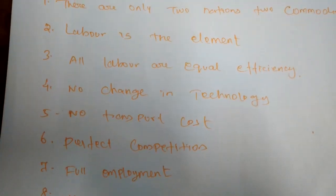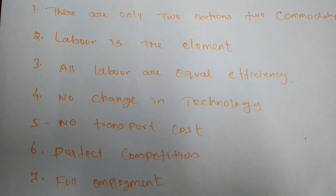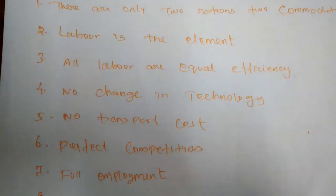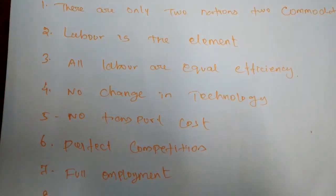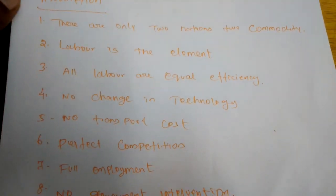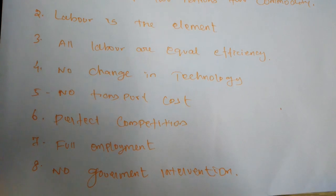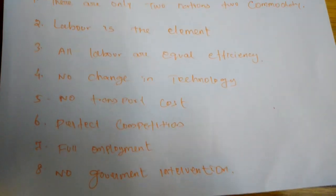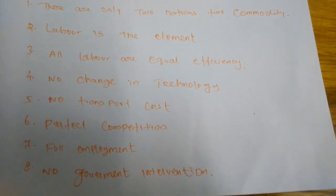Fourth, production is subject to the law of constant returns — even if labor increases, only constant returns are obtained. Fifth, foreign trade is free from all barriers — no taxes, no restrictions. Sixth, there is no change in technology. Seventh, there is no transport cost. Eighth, full employment exists in both nations, and there is no government intervention in international trade.